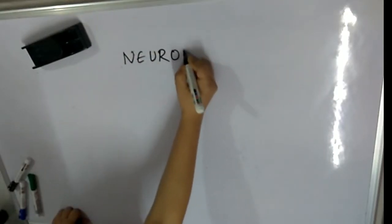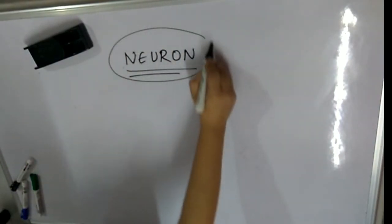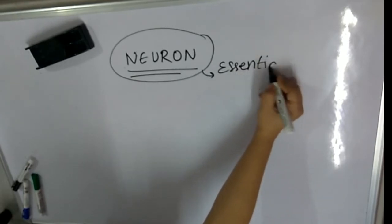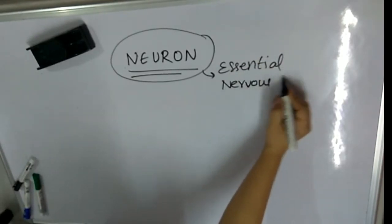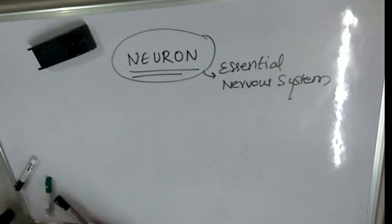Learning about the diagram of a neuron, or the anatomical representation of how a neuron looks. The neuron is the essential unit of the nervous system, so let's learn about how a neuron basically looks.